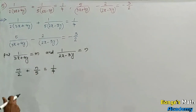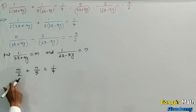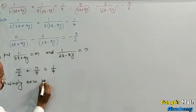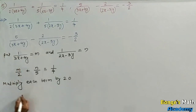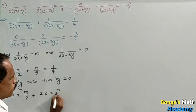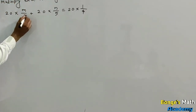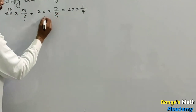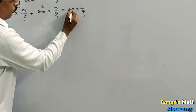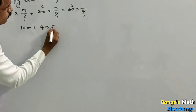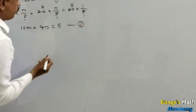Simplify: the denominators are 2, 5, and 4. The LCM of 2, 5, and 4 is 20. Multiply each term by 20: 20 into m upon 2 plus 20 into n upon 5 equal to 20 into 1 upon 4. Cancelling gives 10m plus 4n equal to 5. Give equation number 1.